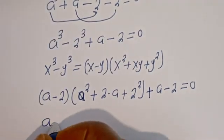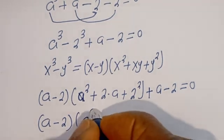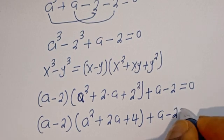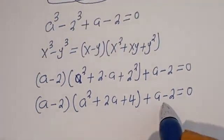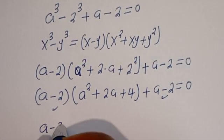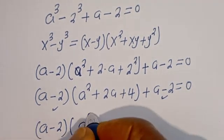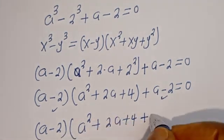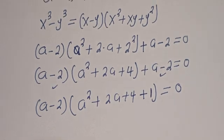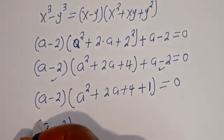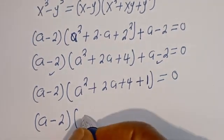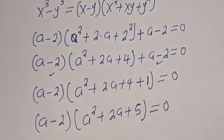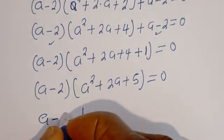Here we have (A minus 2)(A squared plus 2A plus 4) plus A minus 2 is equal to 0. Factoring out (A minus 2), we have (A minus 2)(A squared plus 2A plus 4 plus 1) is equal to 0, giving us (A minus 2)(A squared plus 2A plus 5) is equal to 0.